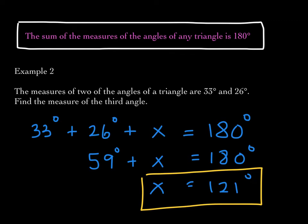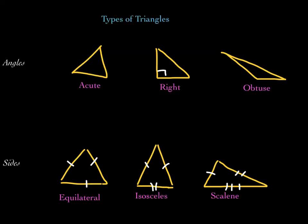Now let's focus on different types of triangles. We can classify triangles by their angles or by their sides. If all angles are acute, it's an acute triangle. If one angle is 90 degrees, it's a right triangle. If one angle is obtuse, it's an obtuse triangle. Classifying by sides: an equilateral triangle has all sides the same length; an isosceles triangle has one pair of equal sides; a scalene triangle has no sides the same length.